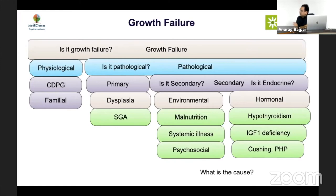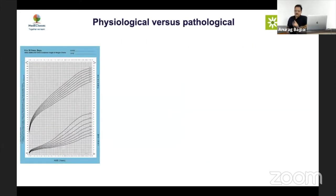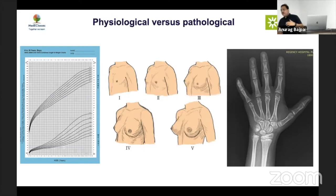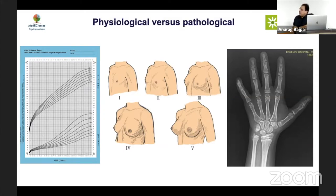The second question is: is it physiological or pathological? To answer this, you look at three things: the growth chart, pubertal development, and bone age. People are often not adequately trained in growth chart interpretation, pubertal assessment, and bone age reading — errors here can have drastic downstream effects. In our app, all three are now available at the click of a button.